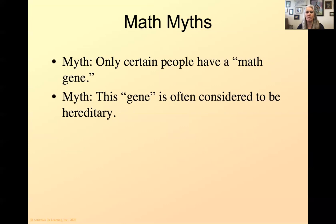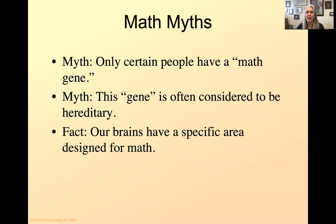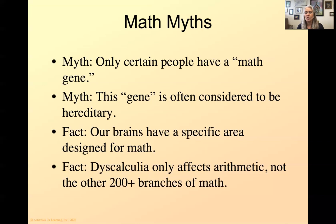Our brains have specific areas designed for math. So everybody has this ability, unless you've got something else going on, brain-related. Dyscalculia only affects arithmetic. So if you can have somebody who's challenged in arithmetic, they can still be good in the other 200 branches, like algebra and geometry and statistics, probability. There's a wide variety of different branches of mathematics.